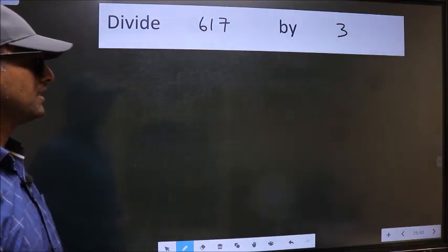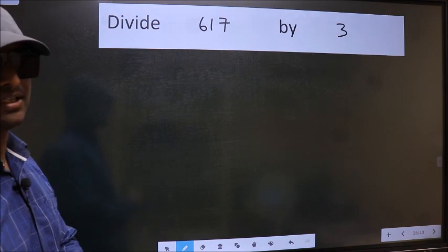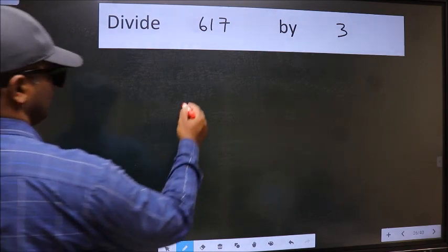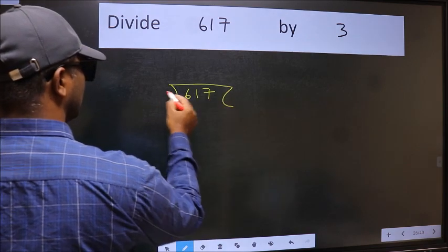Divide 617 by 3. To do this division, we should frame it in this way: 617 and 3 here.